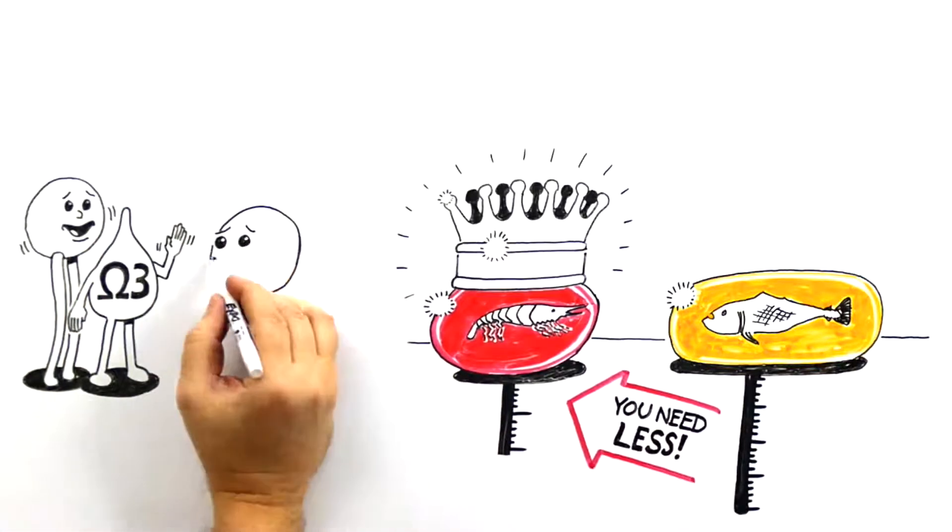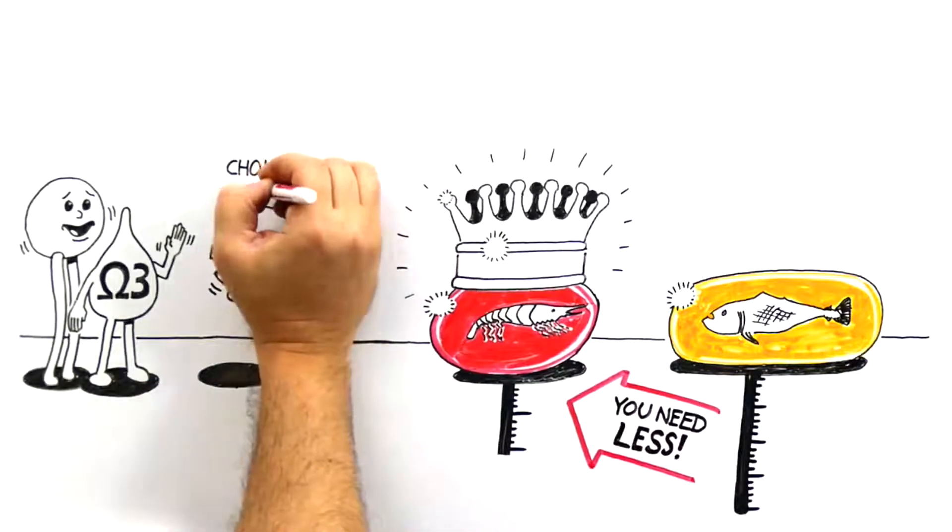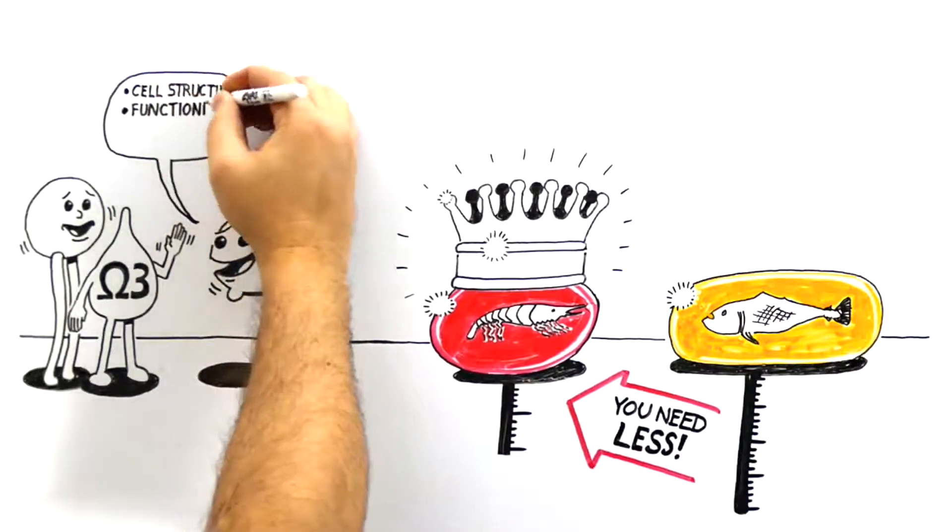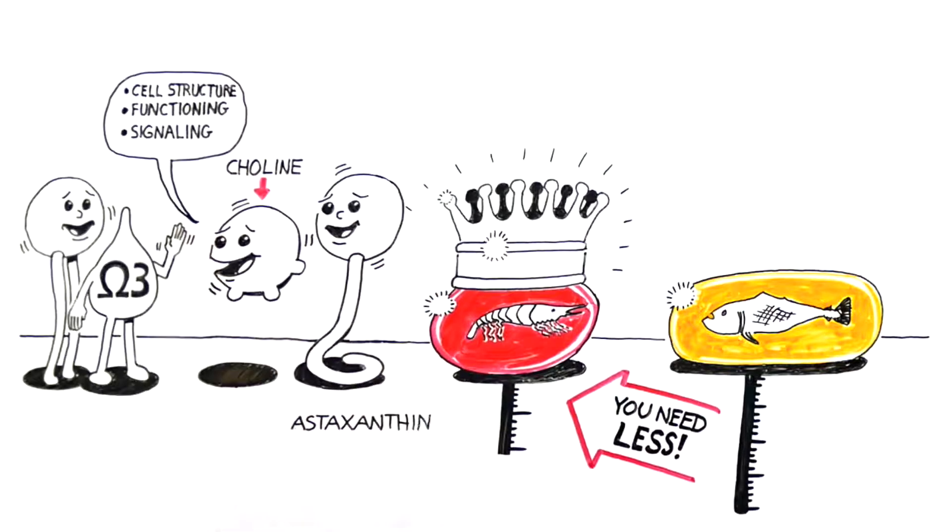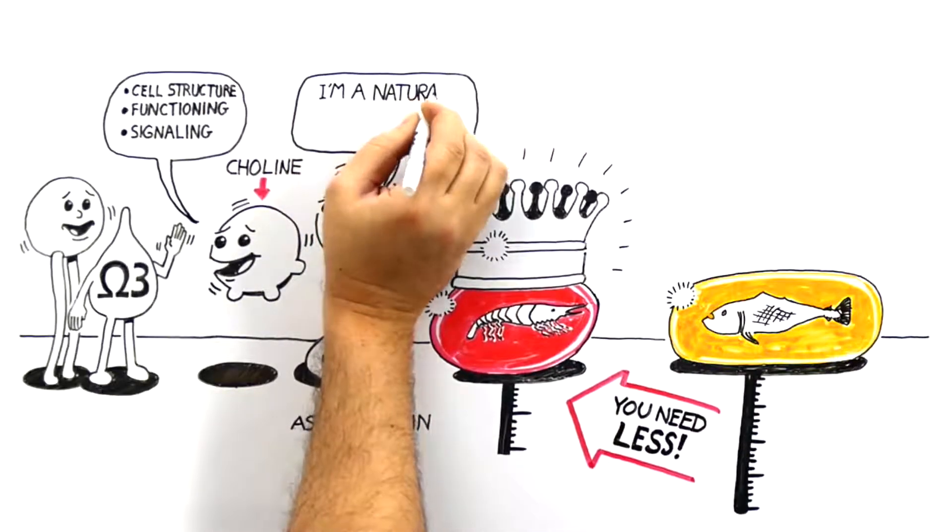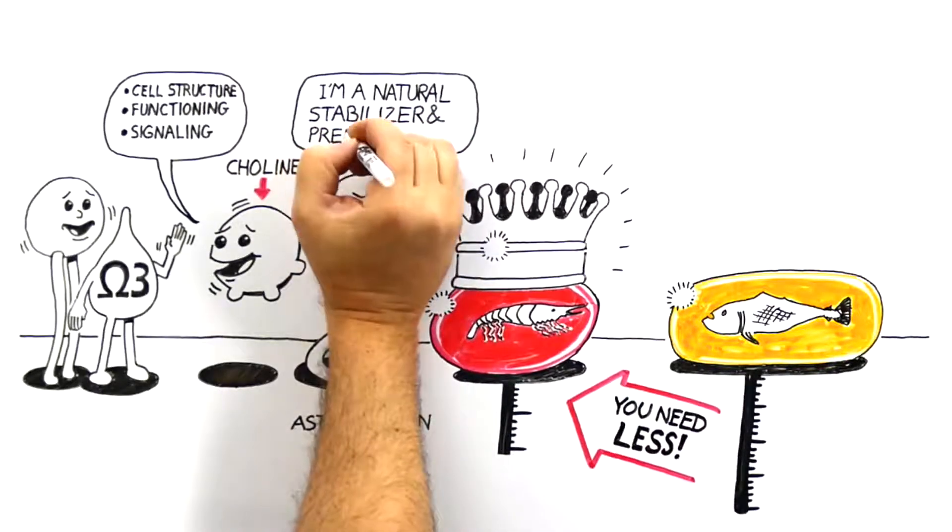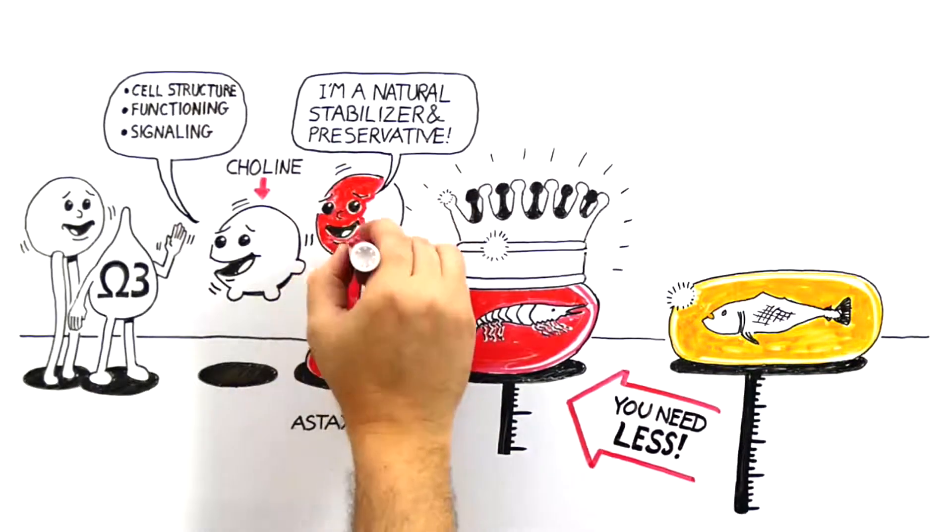On top of that, only krill oil provides, in addition to omega-3 fatty acids, the essential nutrient choline, which is crucial for cell structure, function, and signaling, and like omega-3 fatty acids, contributes to cardiovascular, hepatic, and cognitive health. And let's not forget about astaxanthin. This powerful antioxidant is present in krill oil naturally for a reason, and this is to serve as a natural stabilizer of the omega-3 fatty acids. No added antioxidants necessary. It also serves as a natural preservative, in addition to providing the signature red color of all pure krill oils.